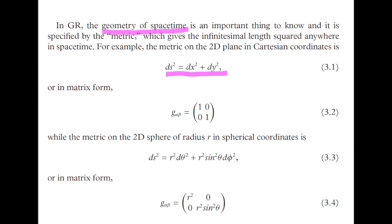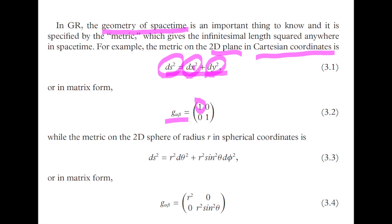Let me show you some of the mathematical formalism of general relativity. In the two-dimensional plane — flat space with Cartesian coordinates x and y — you have dx² plus dy² equal to the infinitesimal length squared. This may look familiar: the Pythagorean theorem is exactly where it comes from. In matrix form, you have the coefficients for the dx², dx dy, dy dx, and dy² terms, labeled g11, g12, and so on.